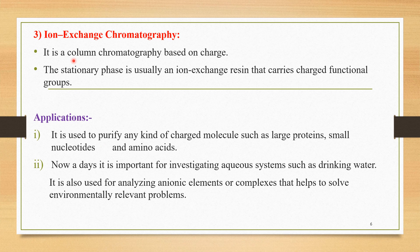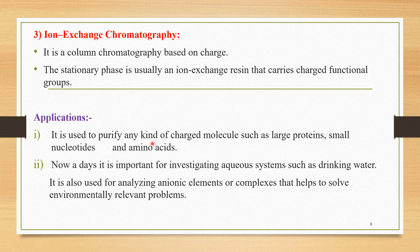The third important type is ion exchange chromatography. It is a column chromatography based on charge. The stationary phase is usually an ion exchange resin that carries charged functional groups. It is used to purify charged molecules such as large proteins, small nucleotides, and amino acids. It is also important for investigating aqueous systems such as drinking water and for analyzing anionic elements or complexes that help solve environmentally relevant problems.